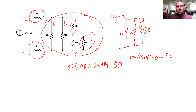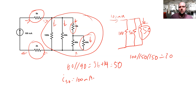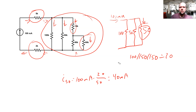Now applying current divider, I want to find the current flowing into that 50 ohm branch — the one containing the 14k and the 90k‖60k. The current through that branch equals the total current, 100 milliamps, times the equivalent resistance, 20, divided by the resistance of that branch, which is 50. So that's going to be 40 milliamps.